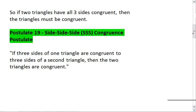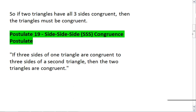So if two triangles have all three sides congruent, then the triangles must be congruent, which is postulate 19, side-side-side, or SSS, congruence postulate.